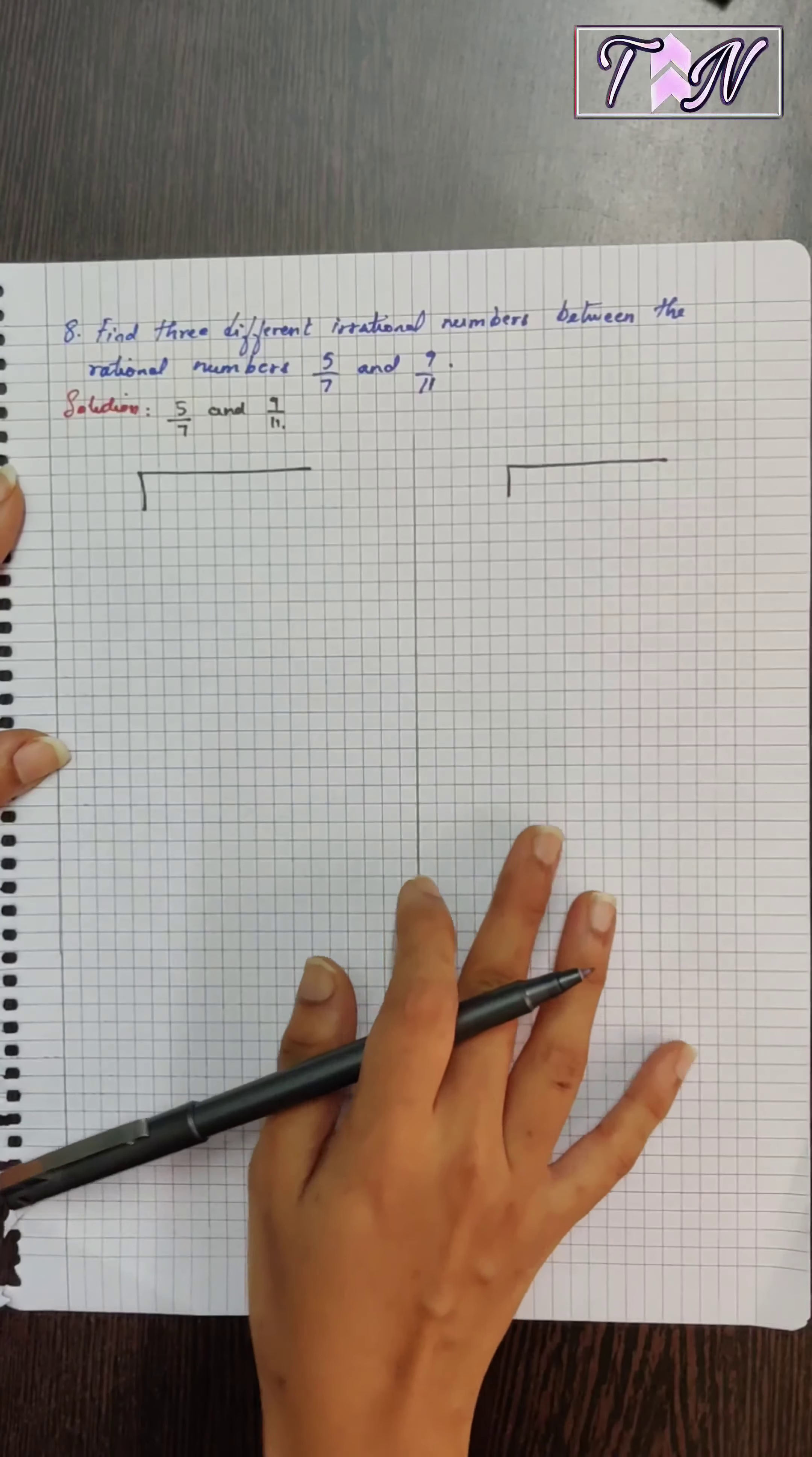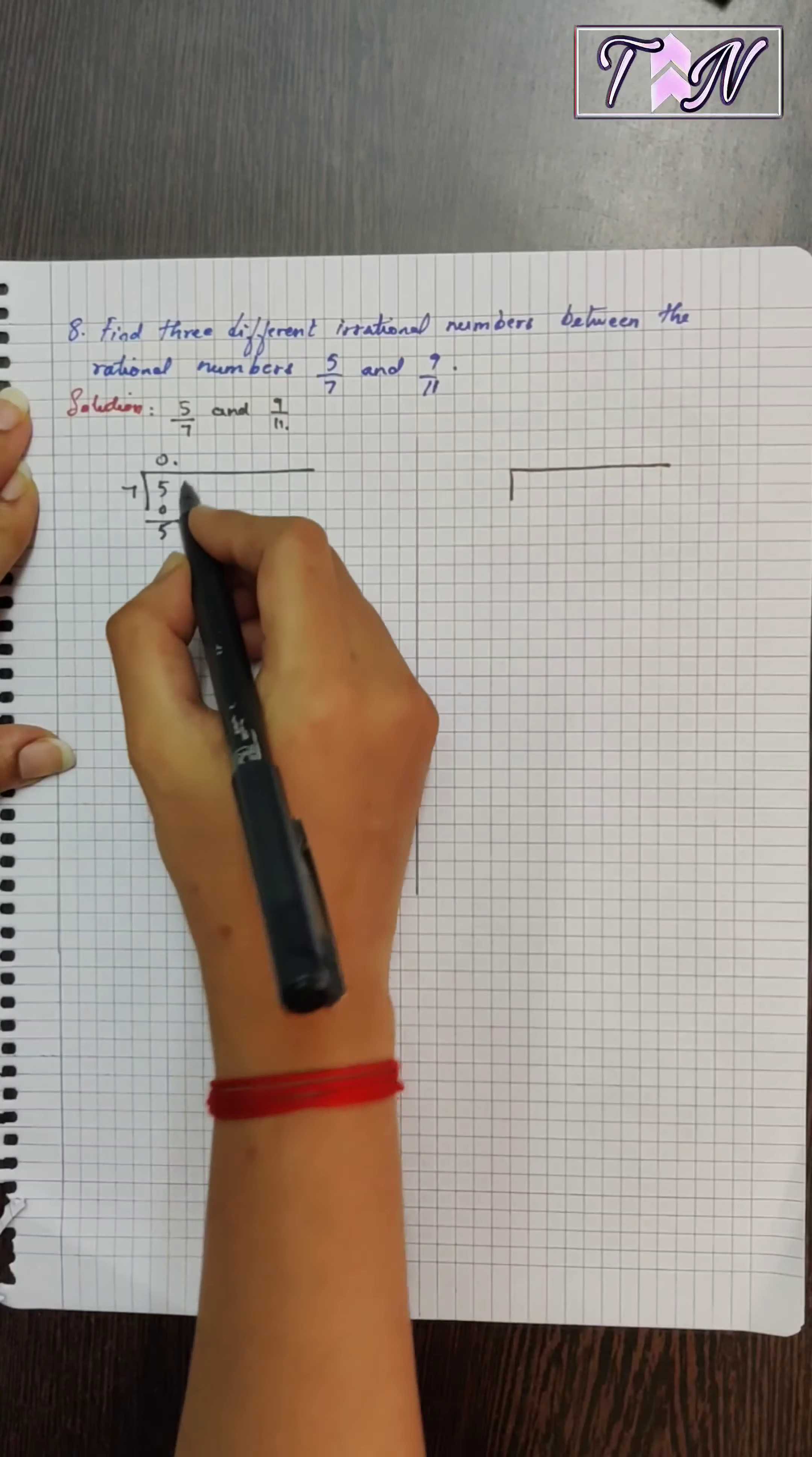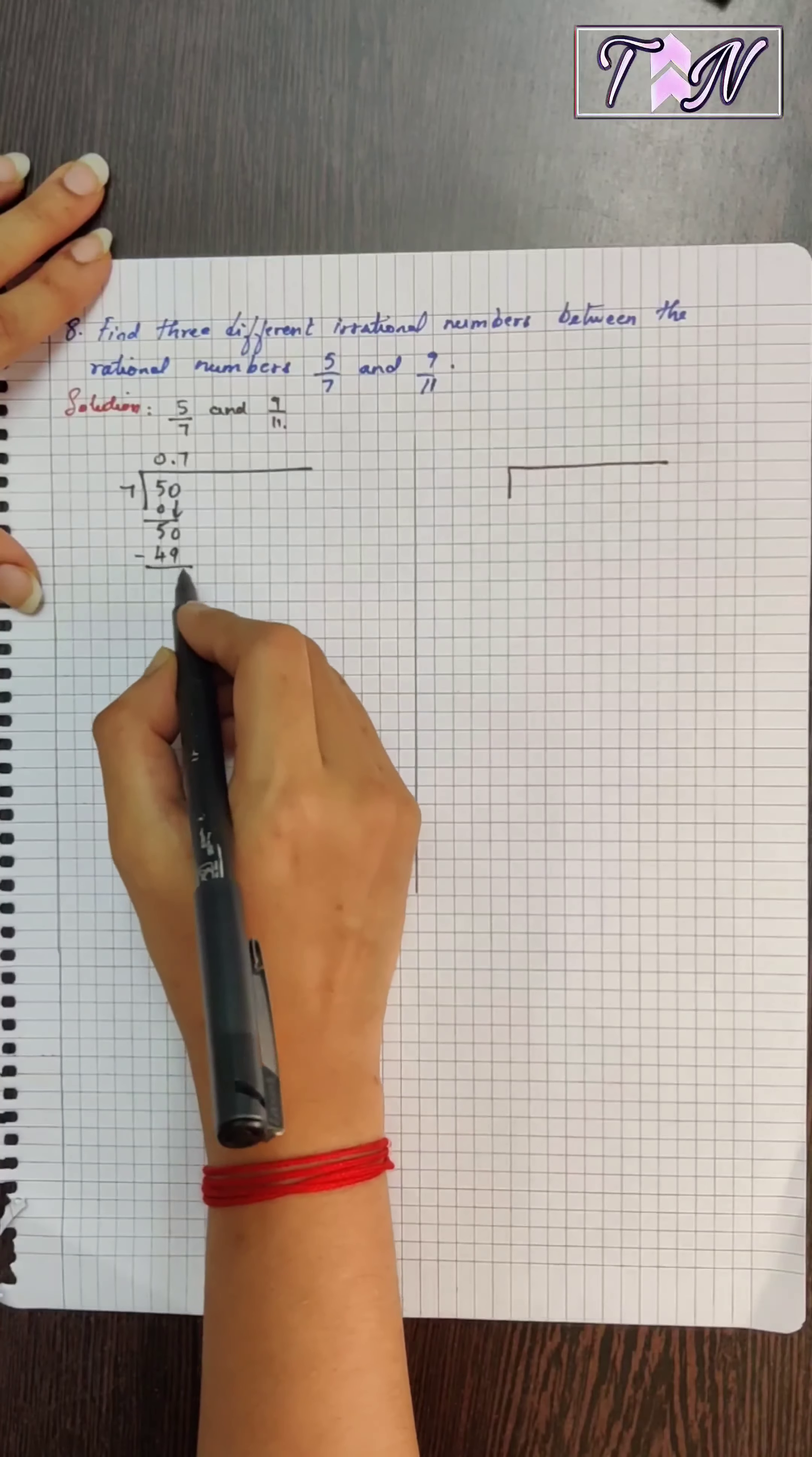First let us see what are the decimal expansions of these two rational numbers. So if I divide 5 by 7, seven zeroes are 0, let me get another zero down. So seven eights are 56, seven sevens are 49. If we subtract this we get 1.